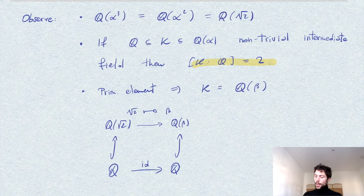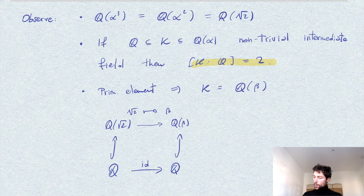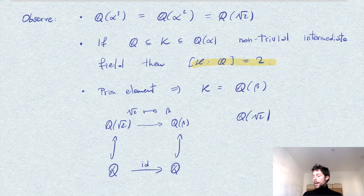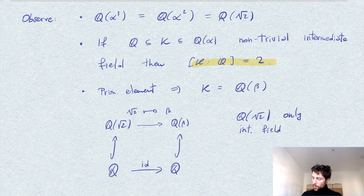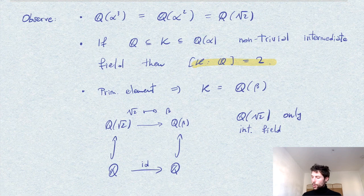So our conclusion is that Q(√2), up to isomorphism, is the only non-trivial intermediate field between Q and Q(α).